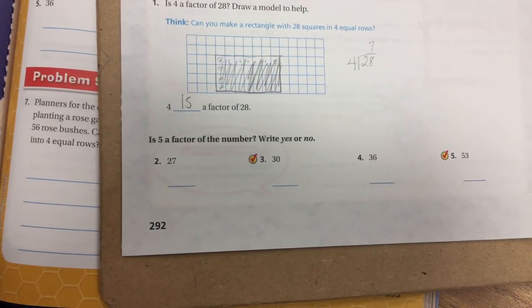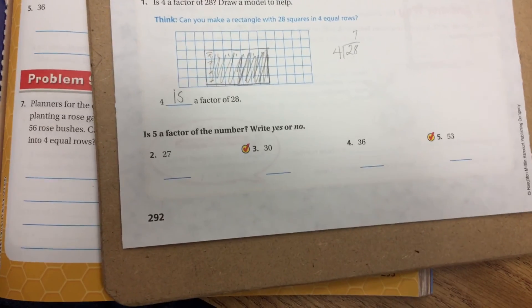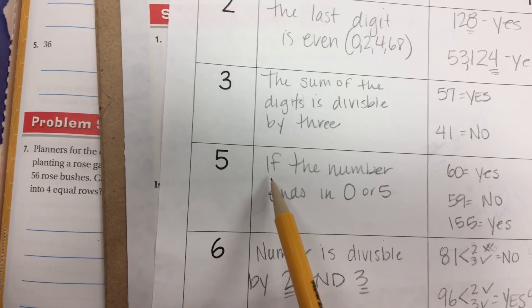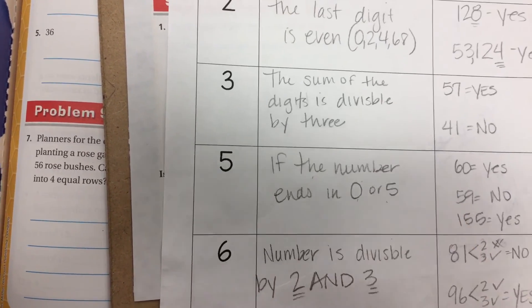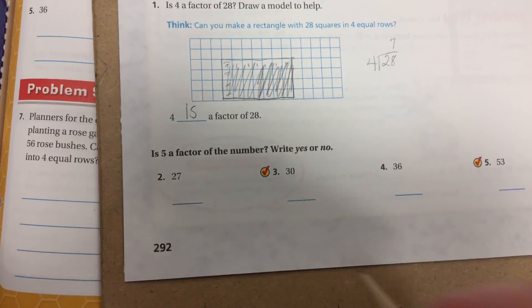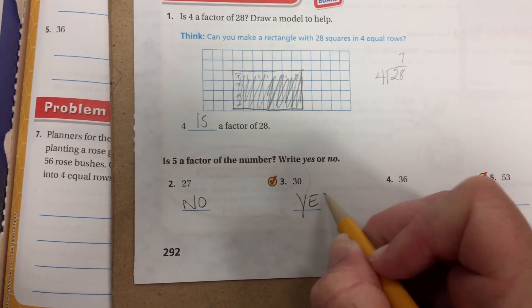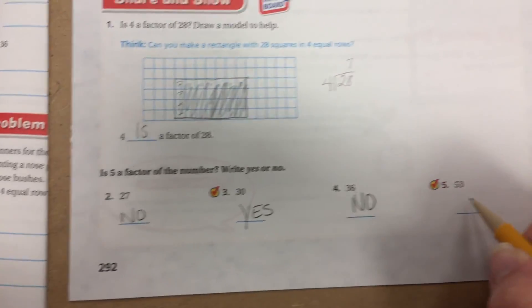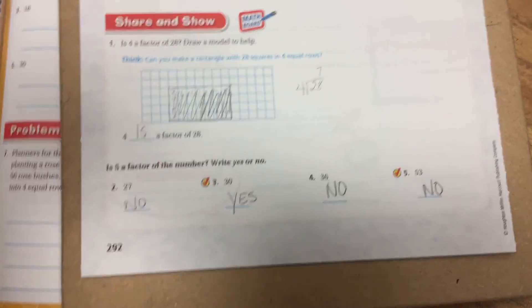Okay, 2 through 5 is super easy. Is 5 a factor of these numbers? Yes or no? Well, then we look down here. A number is divisible by 5 if the number ends in a 0 or 5. Well, let's look at each of these numbers. Are my numbers ending in a 0 or 5? No. 0 or 5? Yes. 0 or 5? No. 0 or 5? No. That simple.